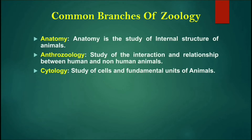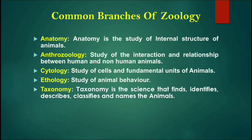Next, Ethology is the study of animal behavior. Now, Taxonomy — Taxonomy is the science that finds, identifies, describes, classifies, and names animals.